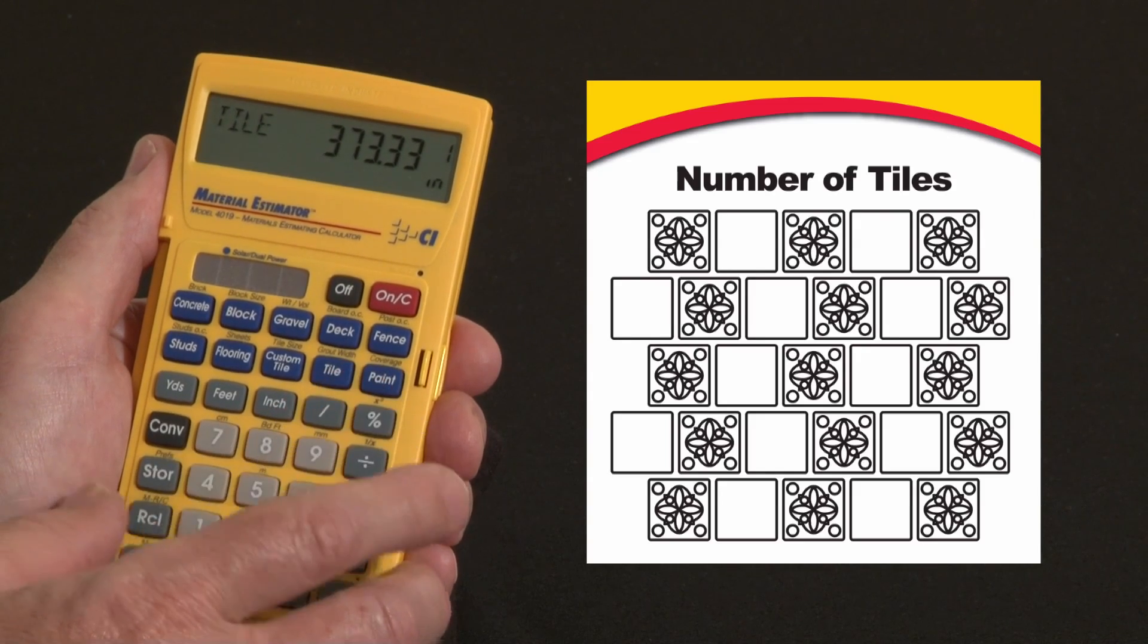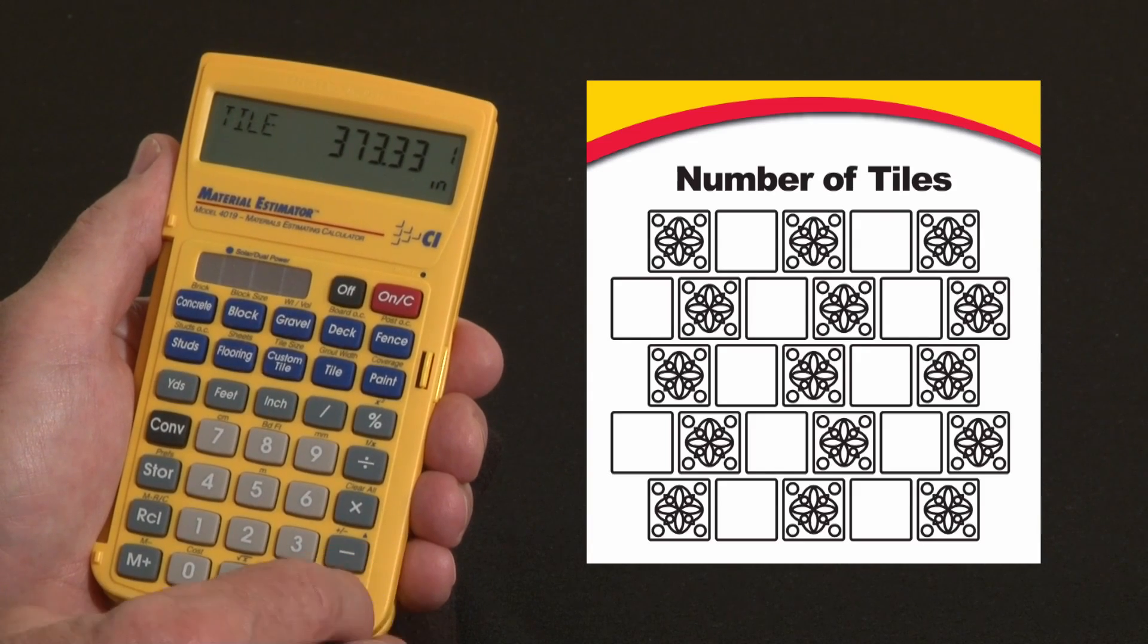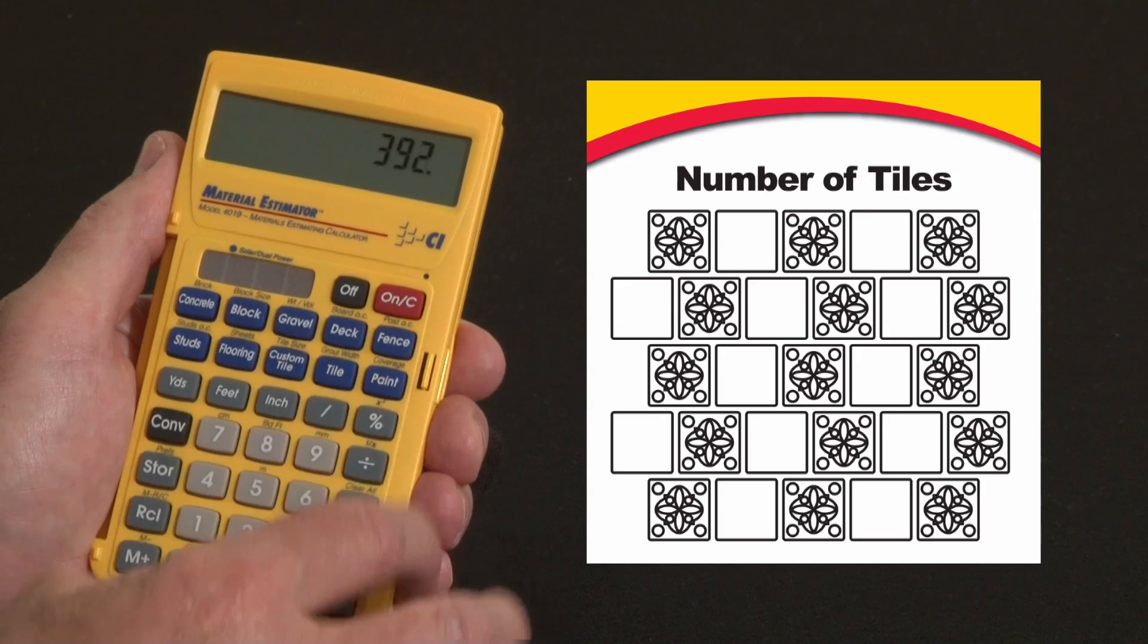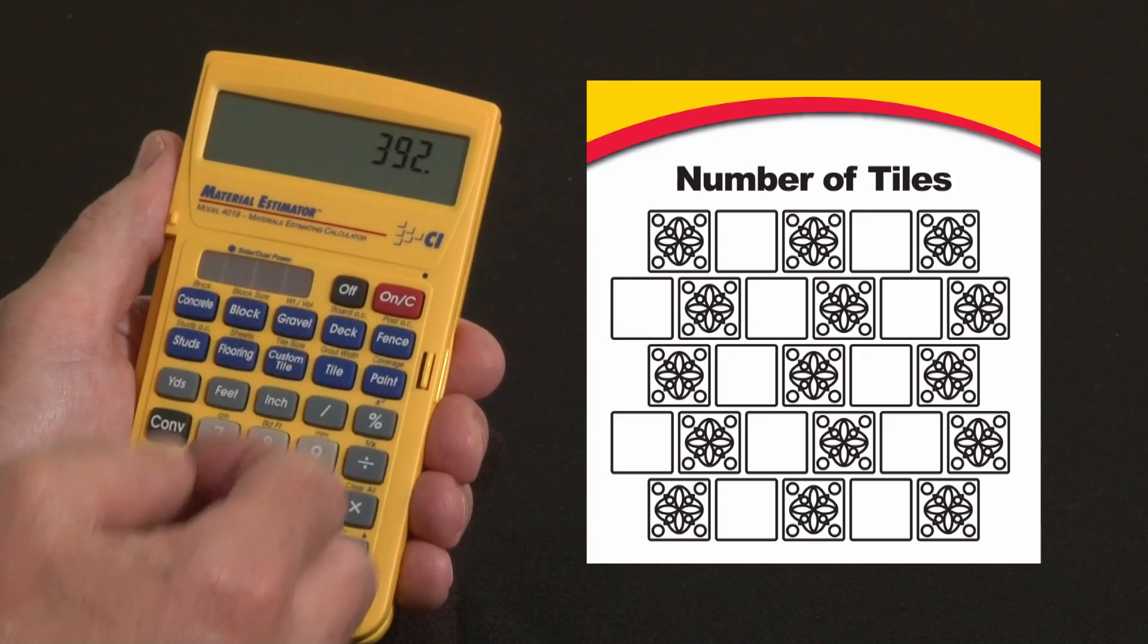Any one of these numbers will work. Say I want to use a one-inch tile, I could say plus 5% and get a total and cost that out.